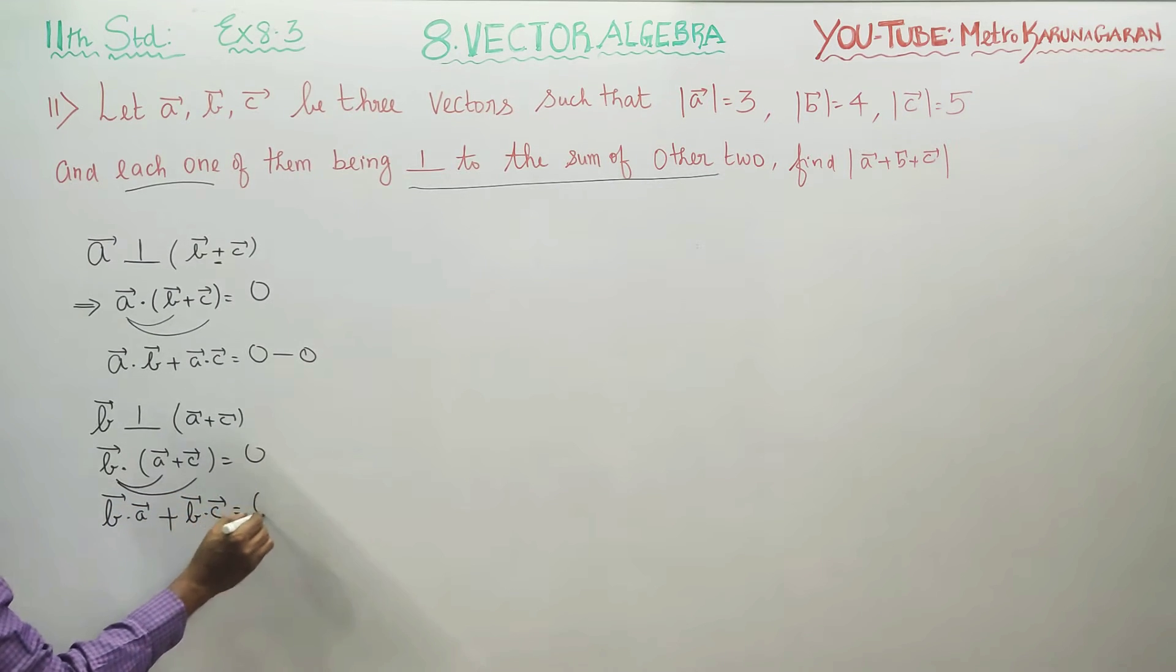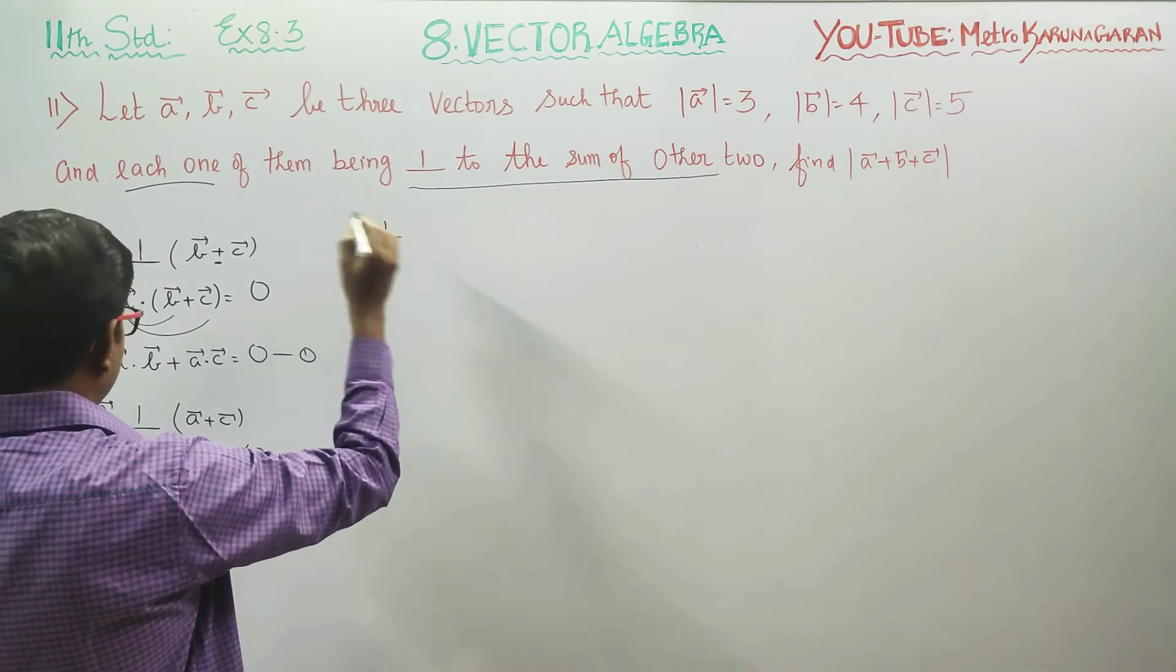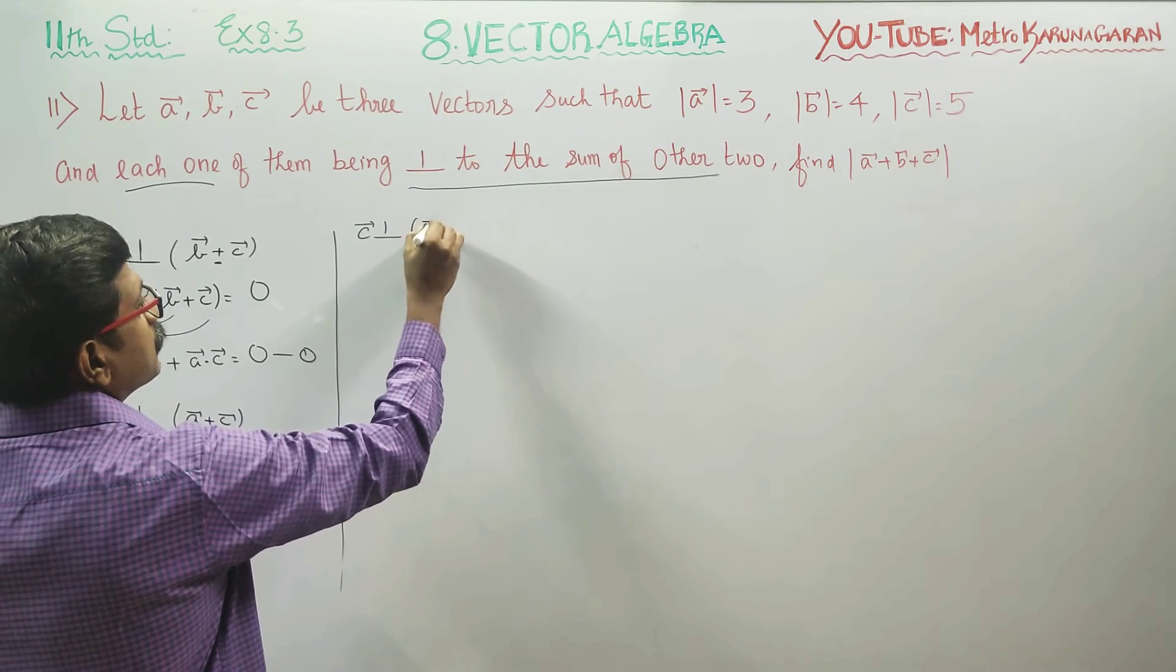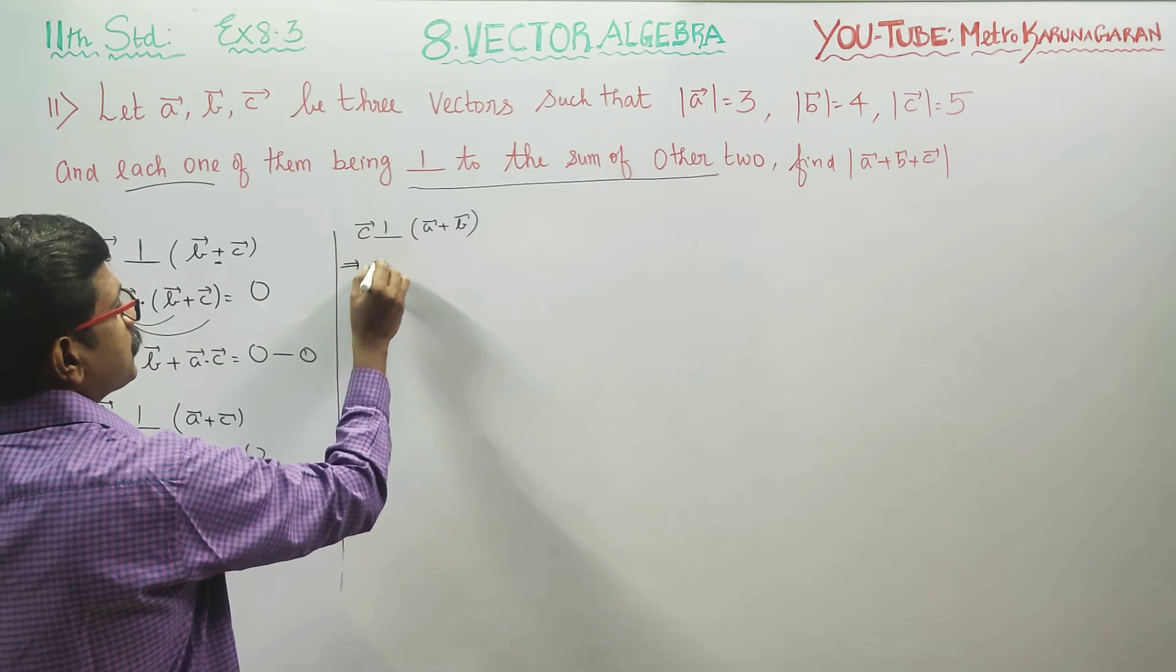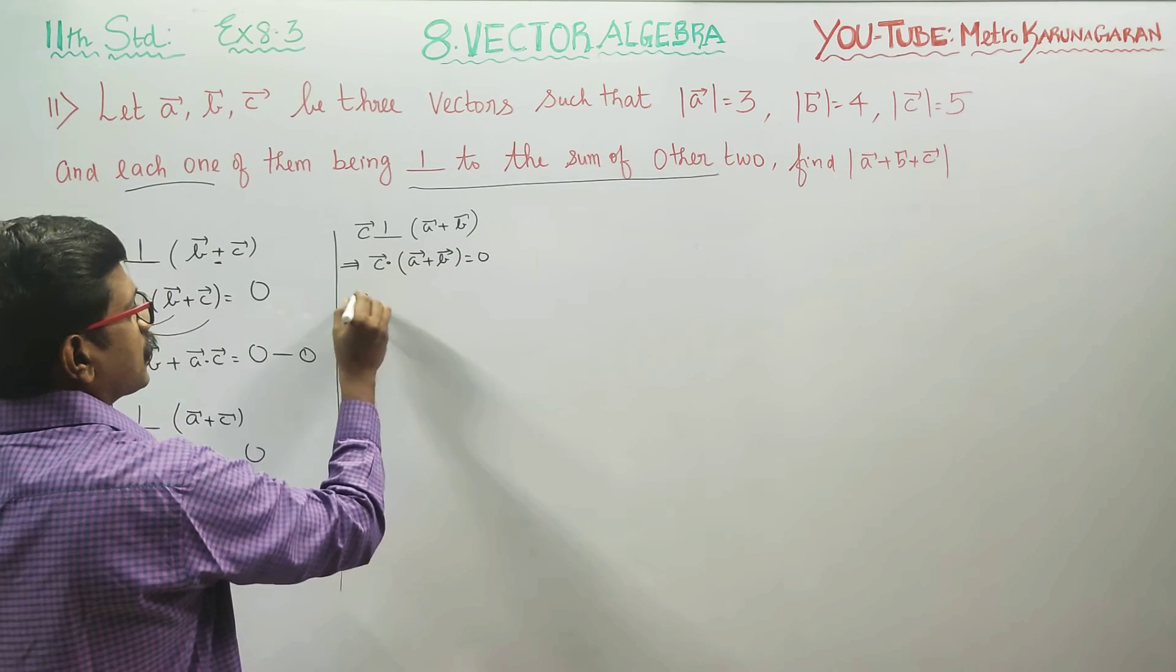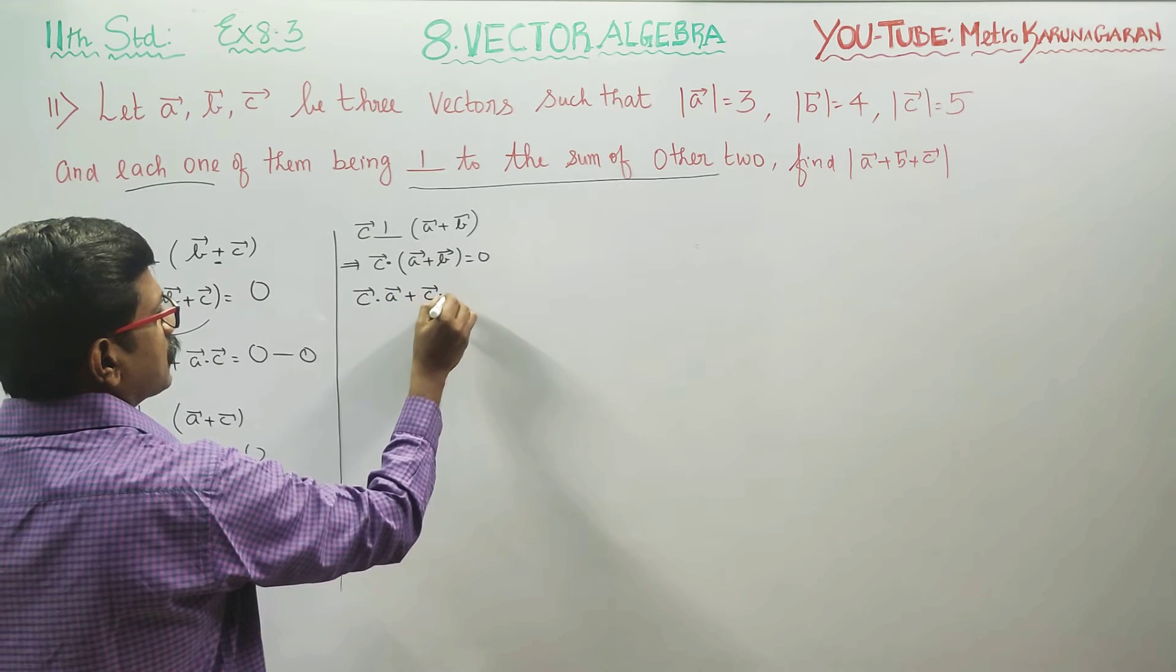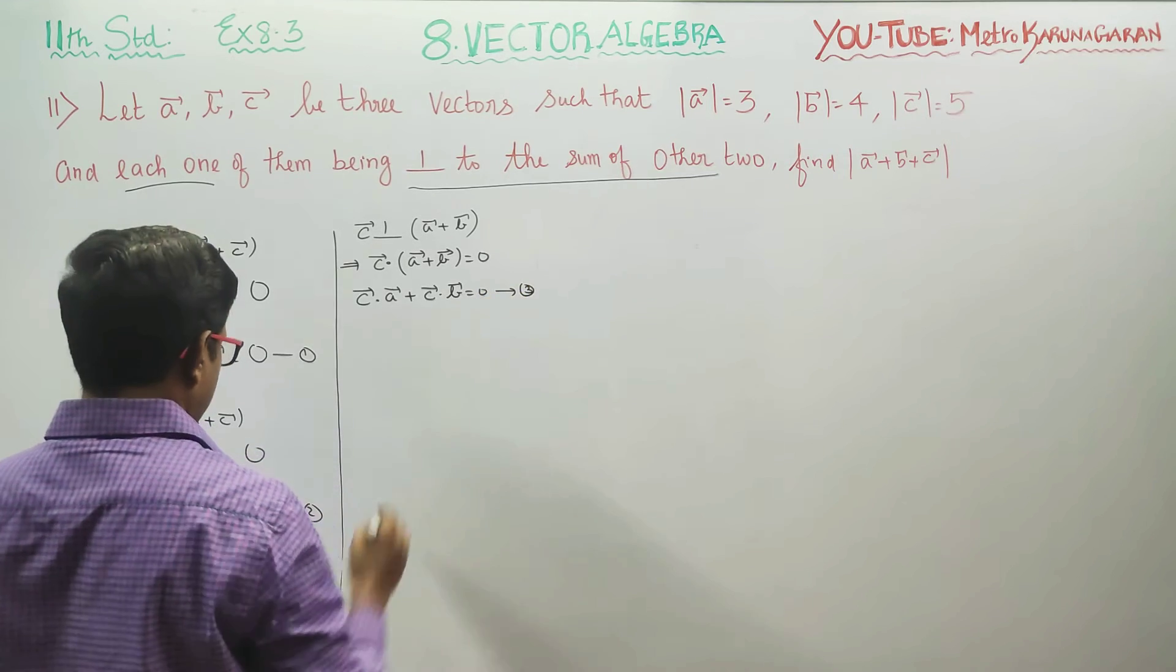Then again, C vector is perpendicular to the sum of the other 2 vectors, means A plus B. What is the meaning of this? If perpendicular, means dot product is 0. C vector dot (A plus B) is equal to 0. C dot A plus C dot B is equal to 0. This is result number 3.